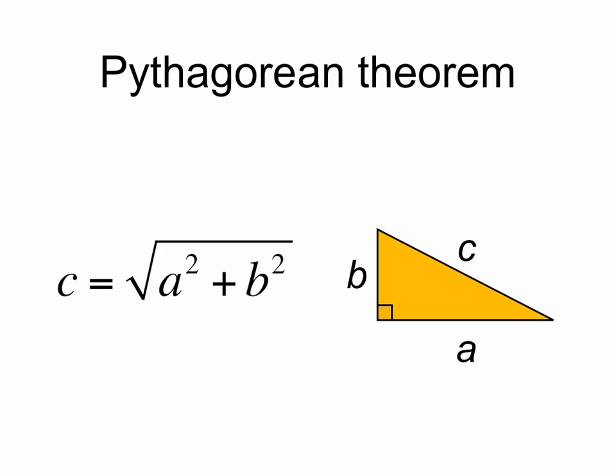Now we're recalling the Pythagorean theorem, which states that the hypotenuse of a right triangle is equal to the square root of the sum of the squares of the legs.